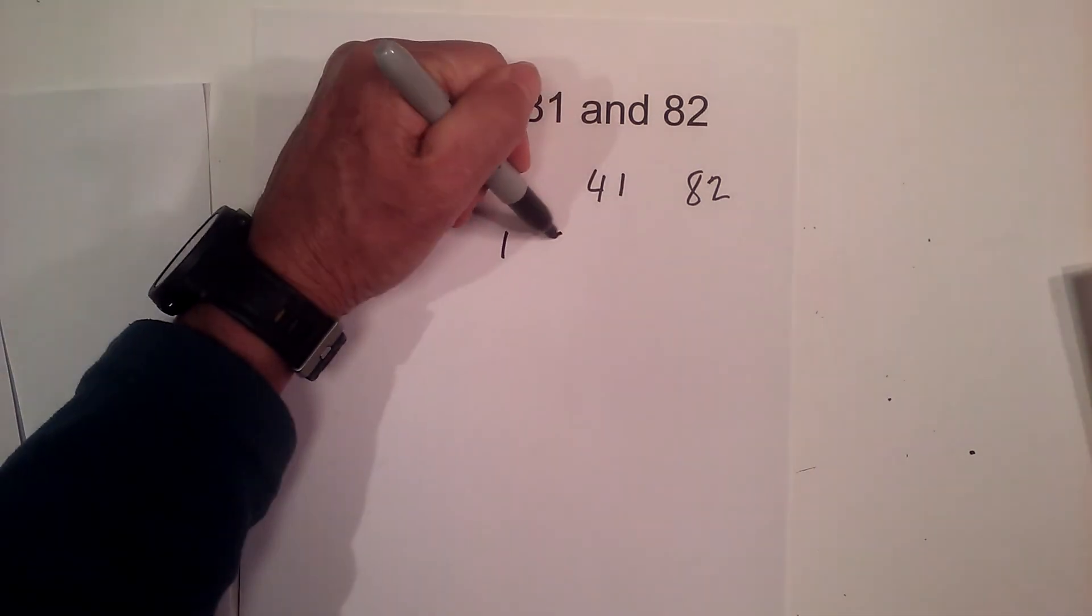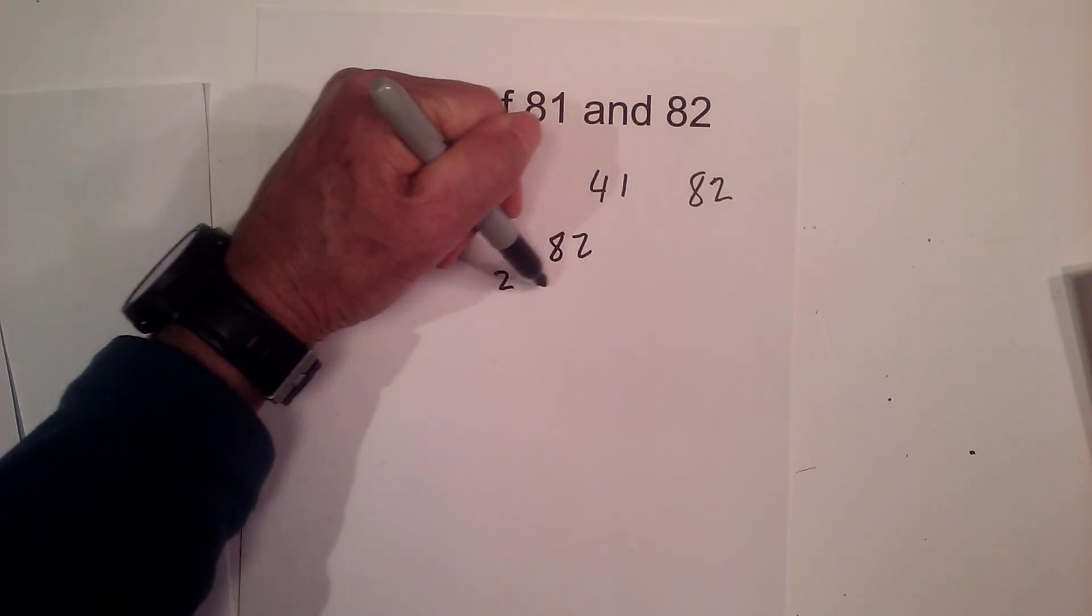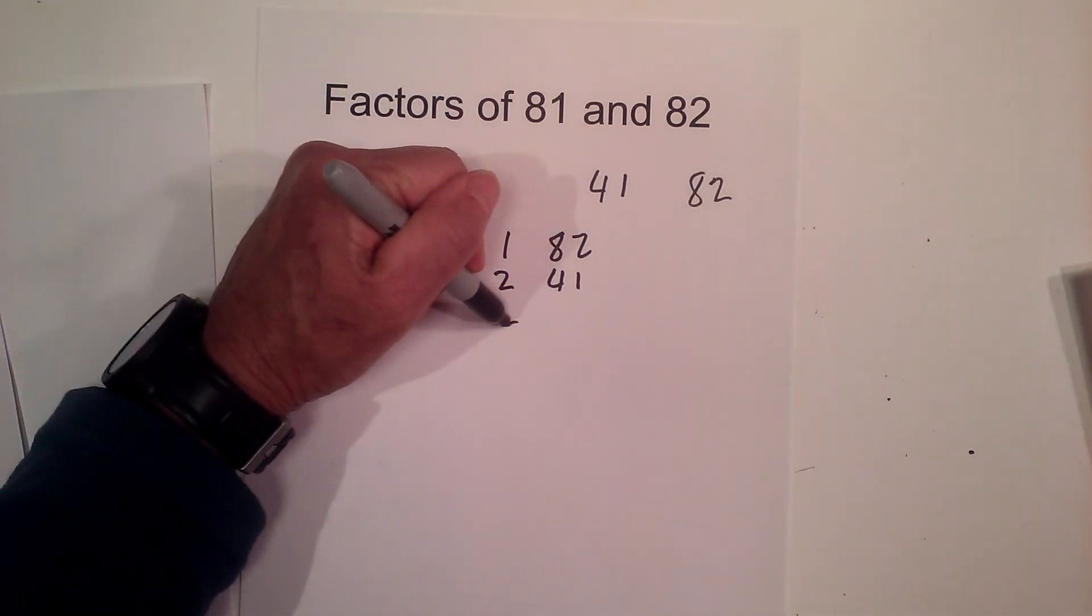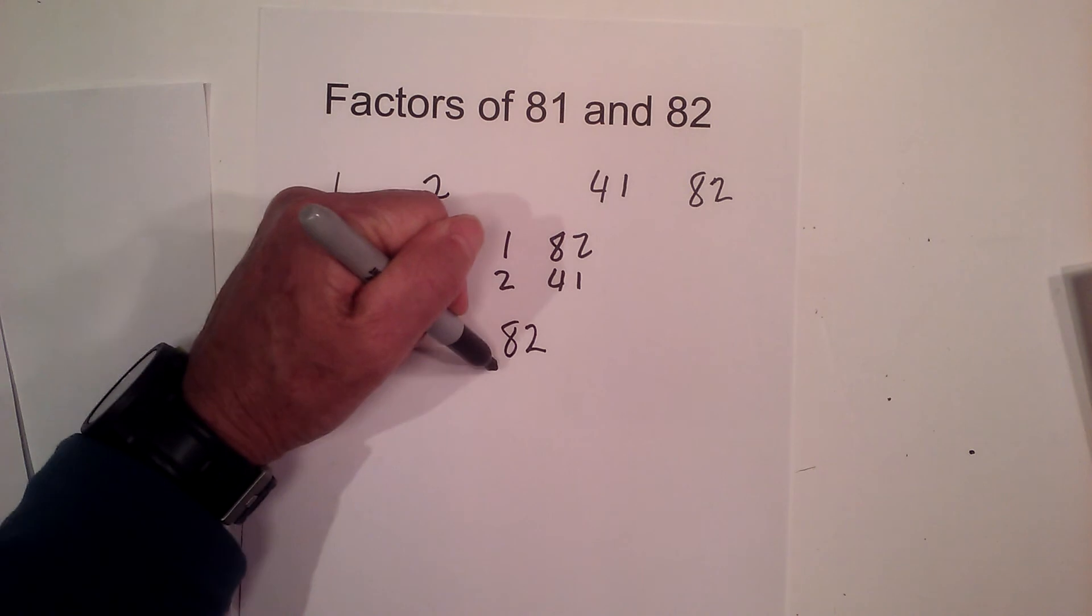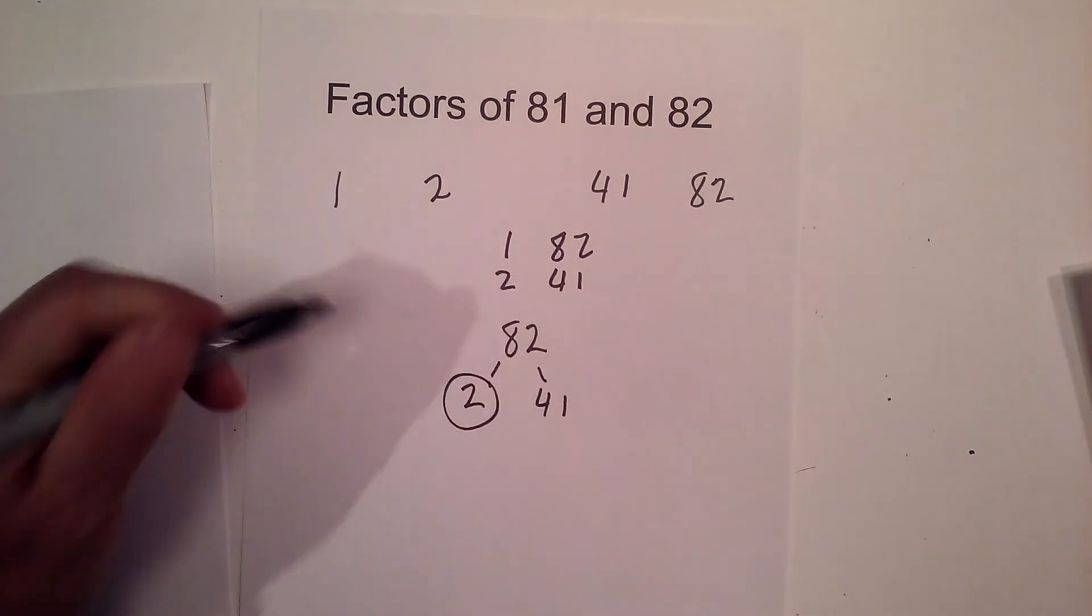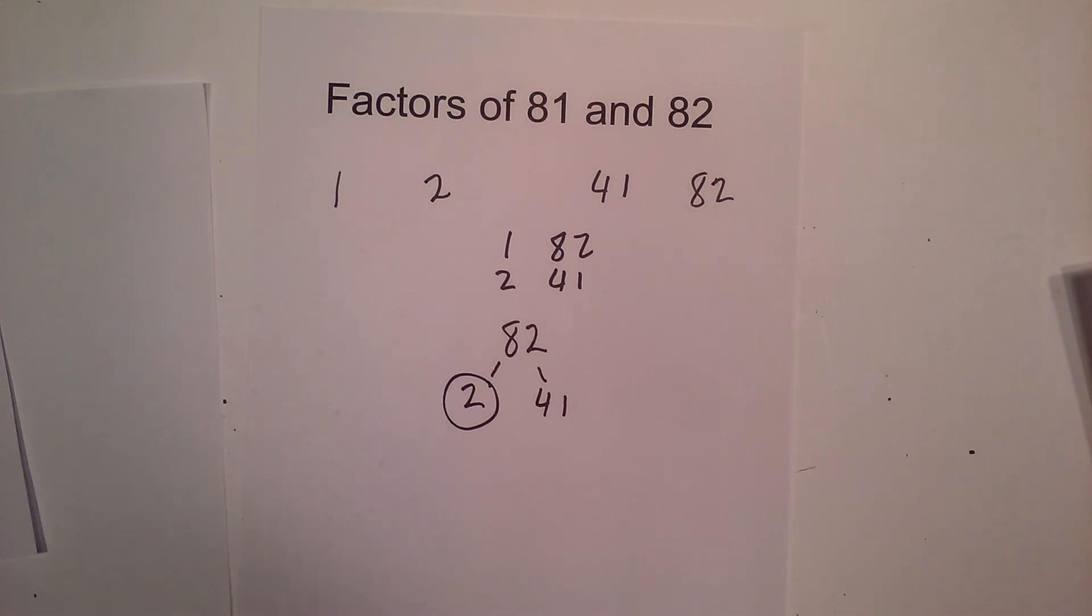Now let's complete a factor tree for 82. So we have 82, and then 2 goes into 82, 41 times. Circle the 2 because it is prime, and I'm going to circle the 41 because it is prime.